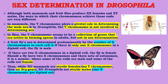Drosophila melanogaster is commonly known as the fruit fly. Although both mammals and fruit flies produce double-X females and XY males, the way in which their chromosomes achieve these ends are very different. In mammals, the Y chromosome plays a pivotal role in determining the male sex.